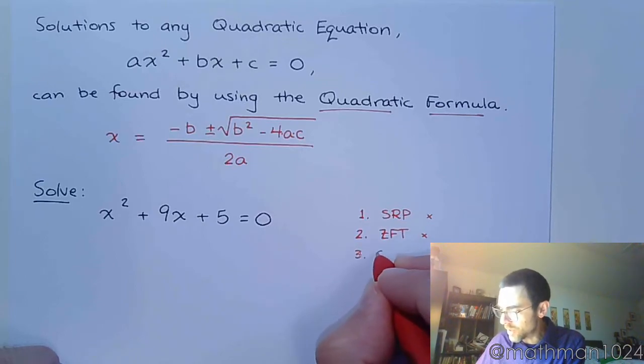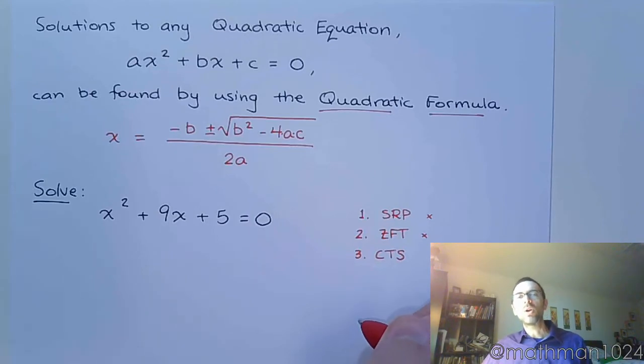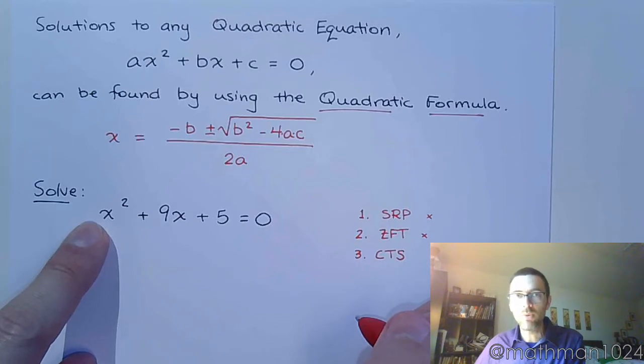The third thing we talked about was completing the square. For us to complete the square nicely and easily, there are two things we wanted. We wanted this guy to be a lead coefficient of 1, and we have that, so that's good.